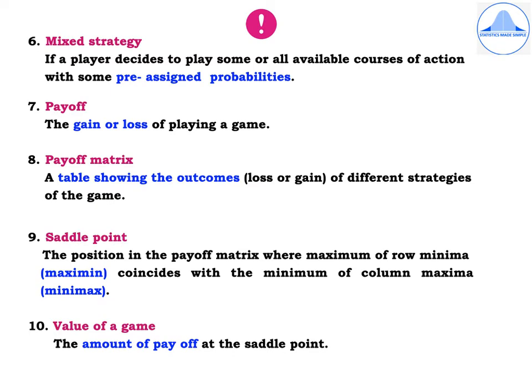Payoff: the gain or loss of playing a game. Payoff matrix: a table showing the outcomes — either the loss or gain of different strategies of the game — is called the payoff matrix. Saddle point: the position in the payoff matrix where the maximum of row minima, called the maximin, coincides with the minimum of the column maxima, called the minimax, is called the saddle point. Value of a game: the amount of payoff at the saddle point is called the value of a game.